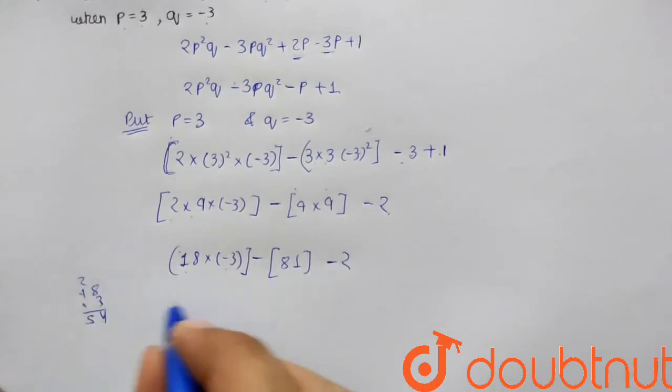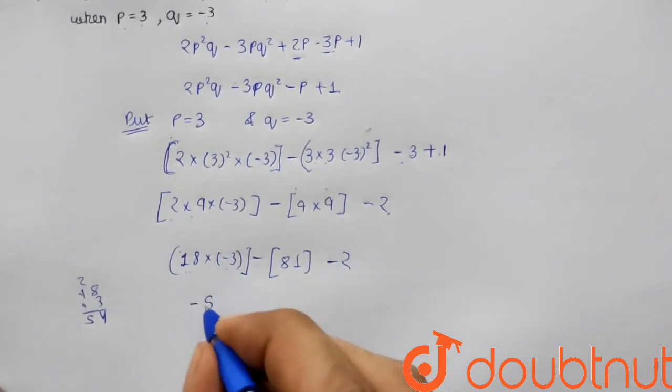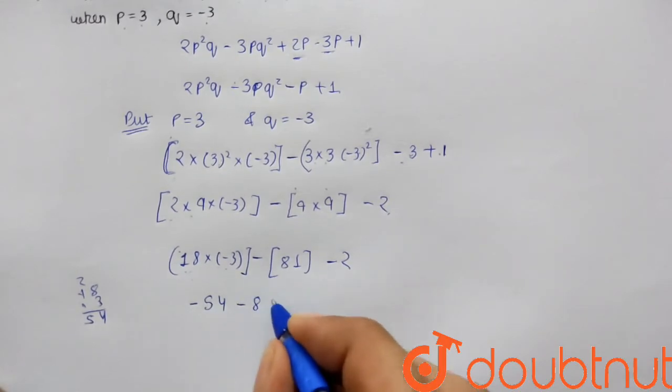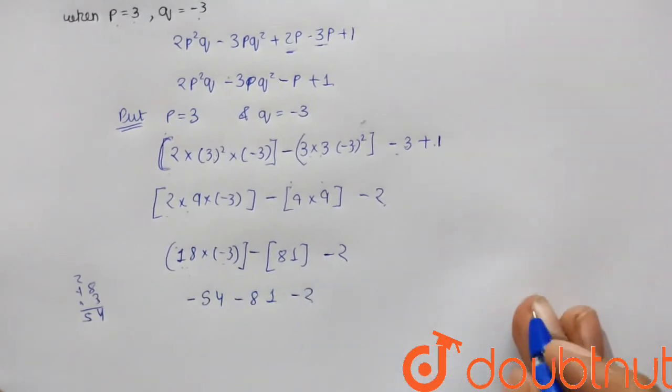Now we are left with 18 × 3. 18 × 3: 8 × 3 is 24, 1 × 3 is 3, carry 2, that's 54.